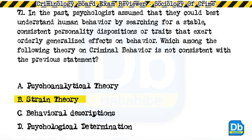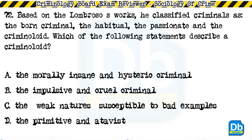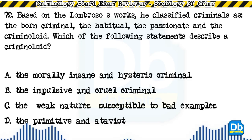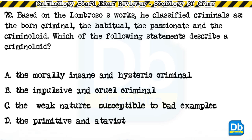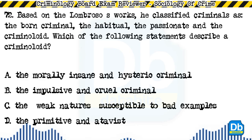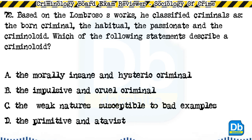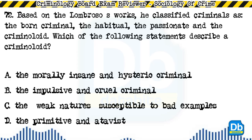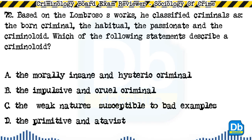Question 72: Based on Lombroso's works, he classified criminals as the born criminal, the habitual, the passionate, and the criminoloid. Which of the following statements describes a criminoloid? a) the morally insane and hysteric criminal, b) the impulsive and cruel criminal, c) the weak natures susceptible to bad examples, d) the primitive and atavist. The answer is C, the weak natures susceptible to bad examples.